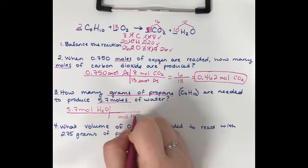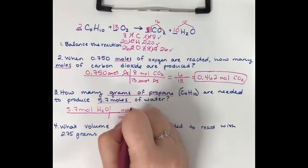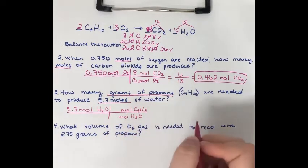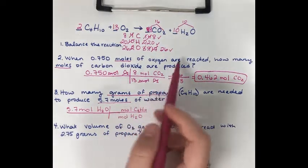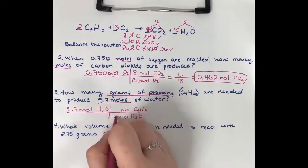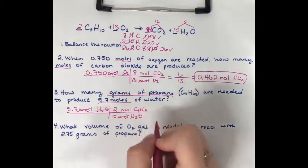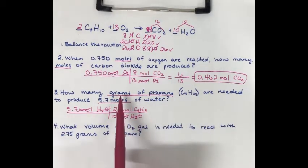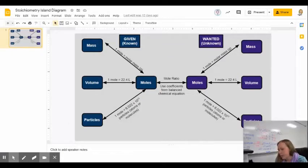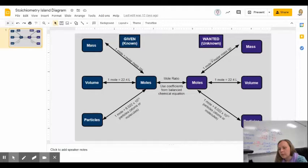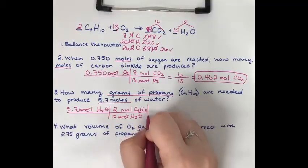To convert to moles of the unknown, which is propane, I put moles of water on the bottom and moles of propane on top. The numbers that go with them: for water I use 10, and for propane I use 2. That first step is done. Now that I'm in moles of propane, the next step gets me to grams, going from moles of the unknown to mass using the molar mass given in grams per mole. I add another step: since I have moles on top, I put moles on the bottom.